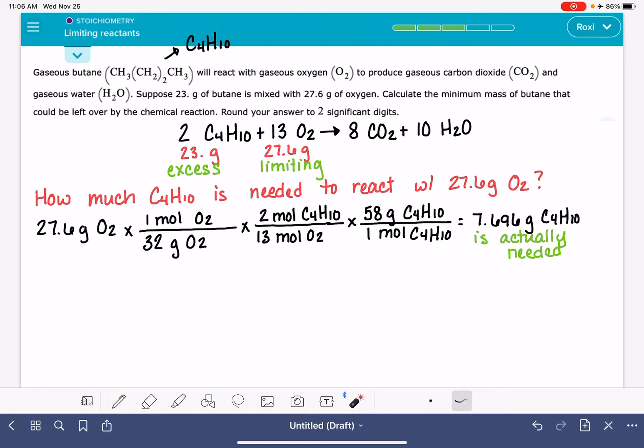So the question wants to know not how much do we actually need, but how much is left over? So of course, the rest of this should be pretty straightforward. If we started with 23 grams initially, and we only needed 7.696 grams, this tells us that we have 15.3 grams left over.